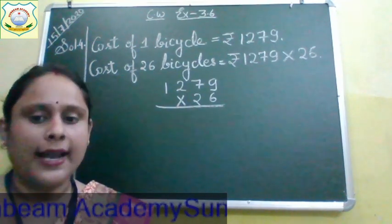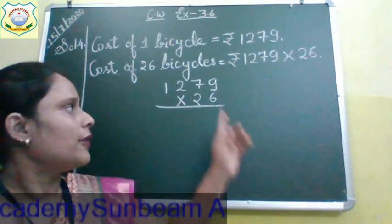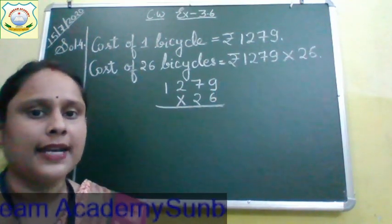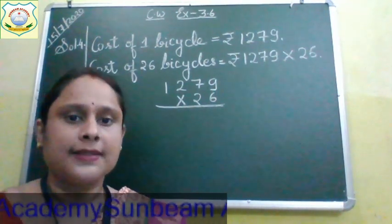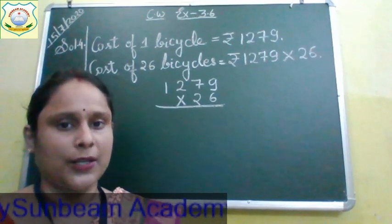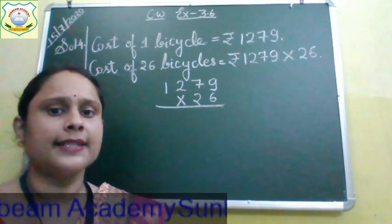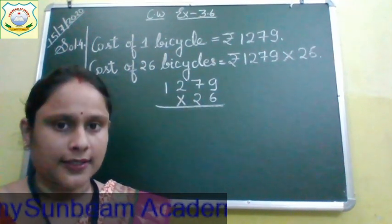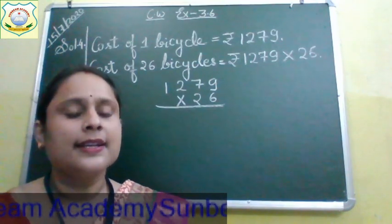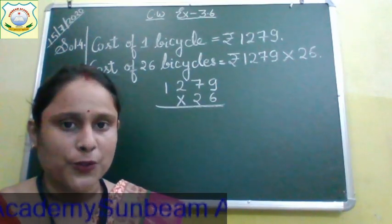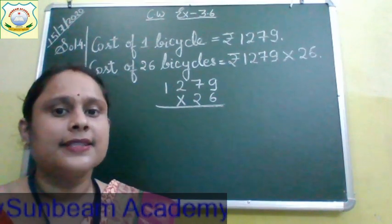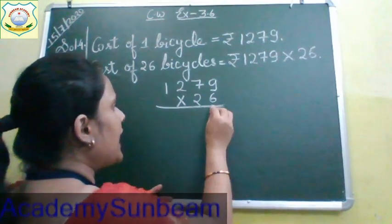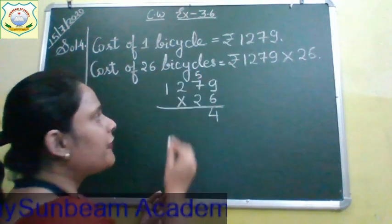Now let's multiply. Look at the board. First we will multiply 6 with 9. Say the table of 6: 6 ones are 6, 6 twos are 12, 6 threes are 18, 6 fours are 24, 6 fives are 30, 6 sixes are 36, 6 sevens are 42, 6 eights are 48, 6 nines are 54. So we will write 4 here and take 5 as carry.